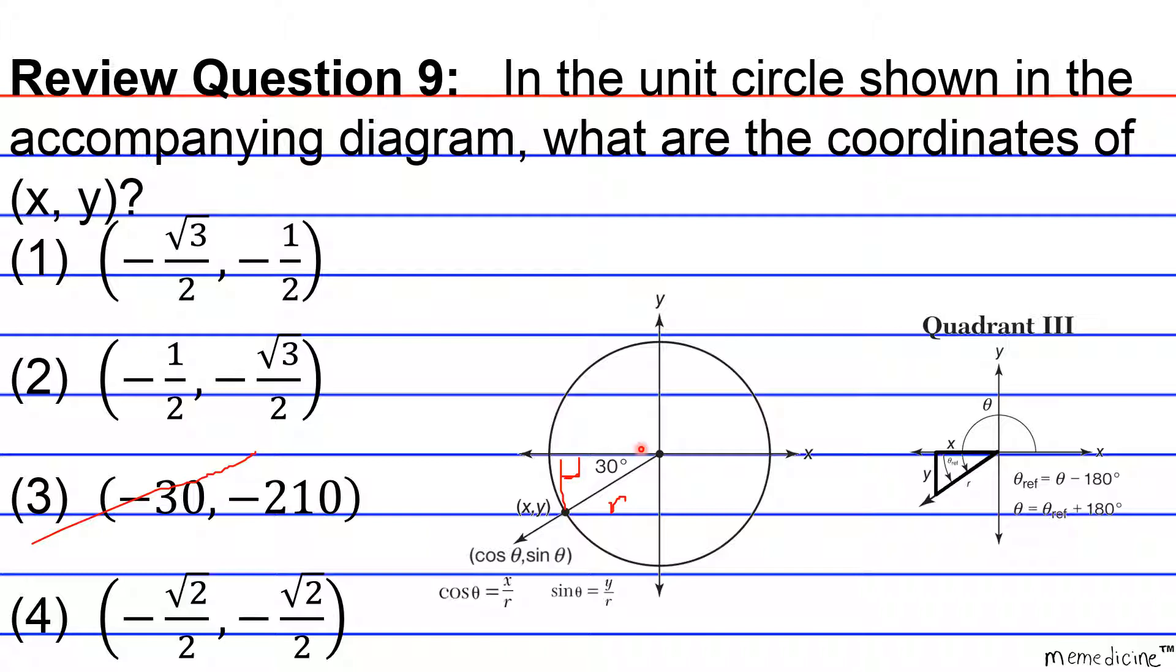So, if you memorize the cosine of 30, you'll know that it's radical 3 over 2. But since we're in quadrant 3, the x value is going to be negative, making the entire cosine negative. Therefore, actually, we can eliminate, just based on that knowledge alone, we can eliminate two other answer choices. Well, the cosine here is negative 1 over 2. That's wrong. And the cosine here is actually the cosine of 45 degrees. That's wrong as well. Alright, and if you had also memorized the sine of 30 degrees, you would know that it's 1 half. But again, since we're in quadrant 3, it's going to be negative 1 half. Therefore, the correct answer choice is answer choice 1.